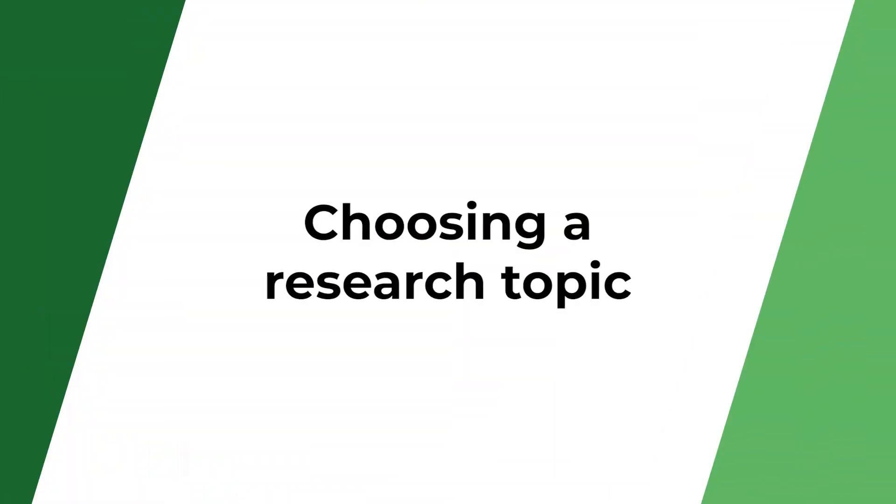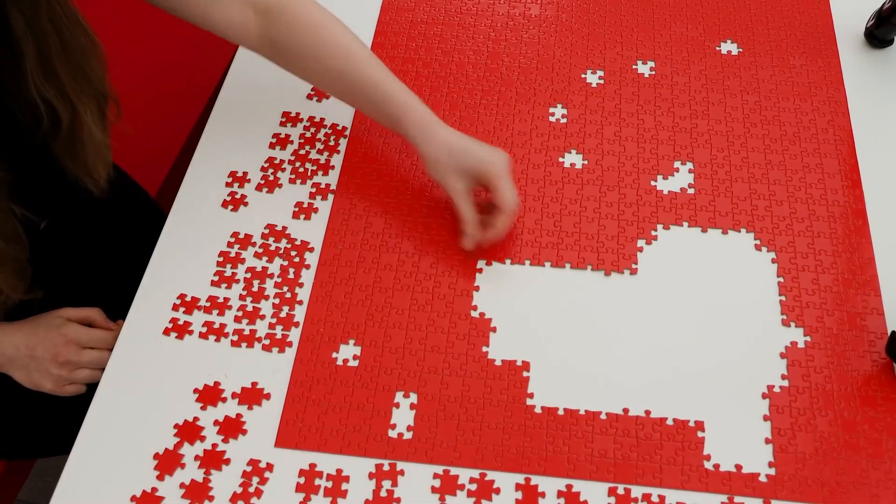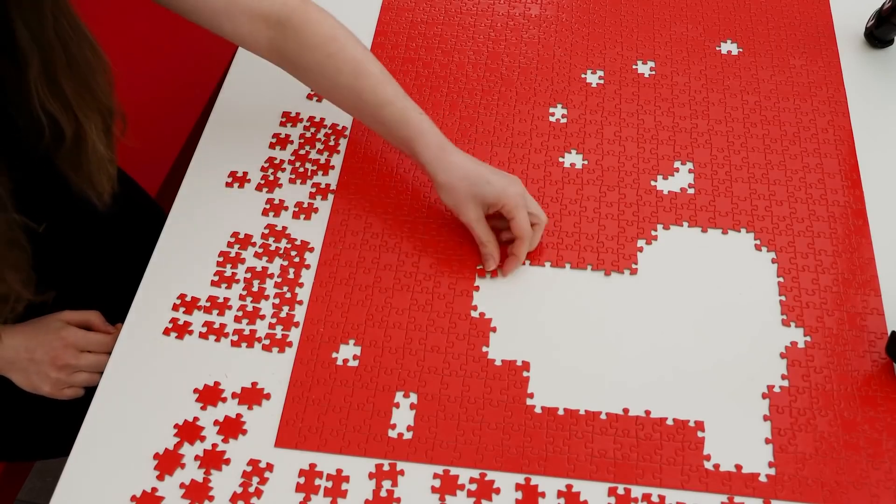Got it? Let's dive in. Number one: choosing a topic and research question. The first and most important step for any article is to clearly define your topic and research question. Try to choose a topic that is not only interesting to you, but also relevant to the scientific community. Ask yourself: can my research answer any important questions that haven't been fully explored? The goal is to fill a gap in the field with your study.